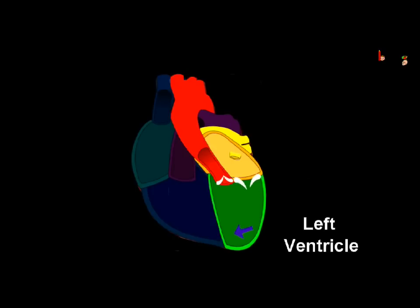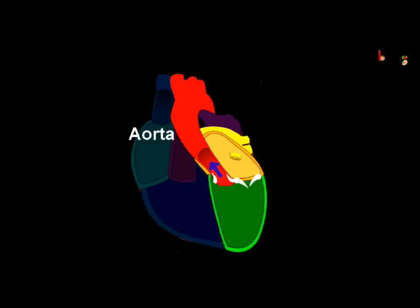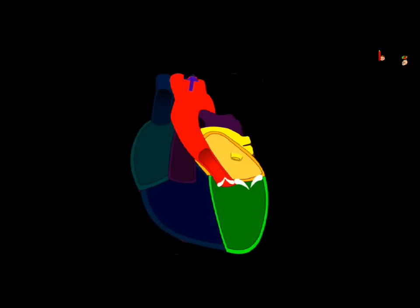The same events happen in the ventricle too. A ventricle receives blood when its muscles are in a relaxed state, and then the ventricle shrinks, forcing the blood into the arteries.